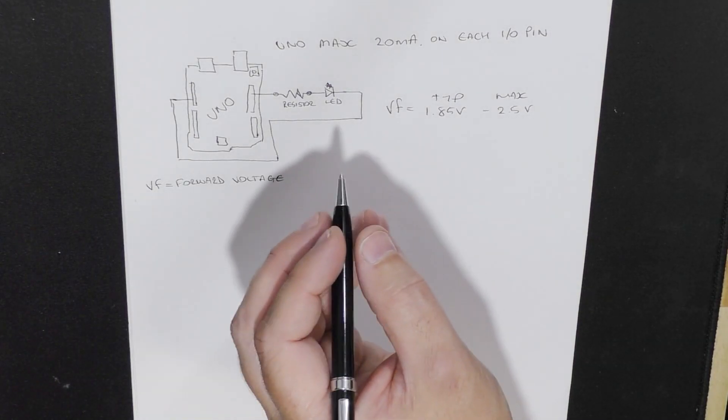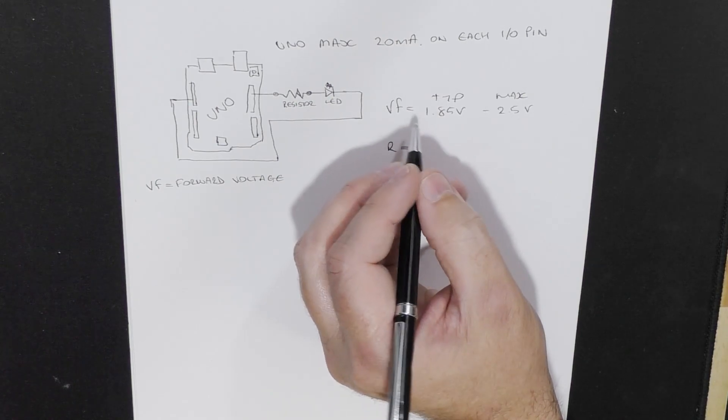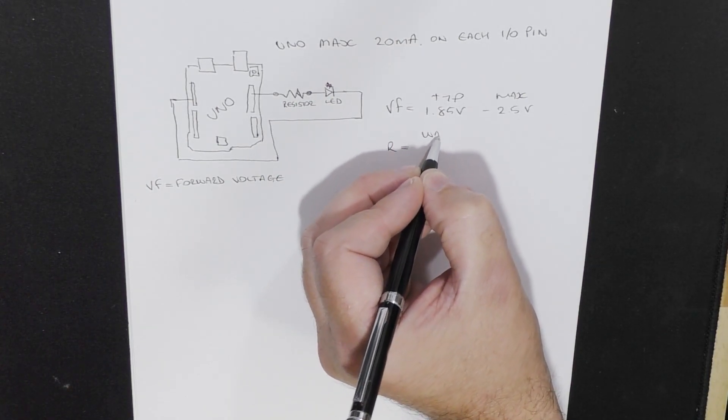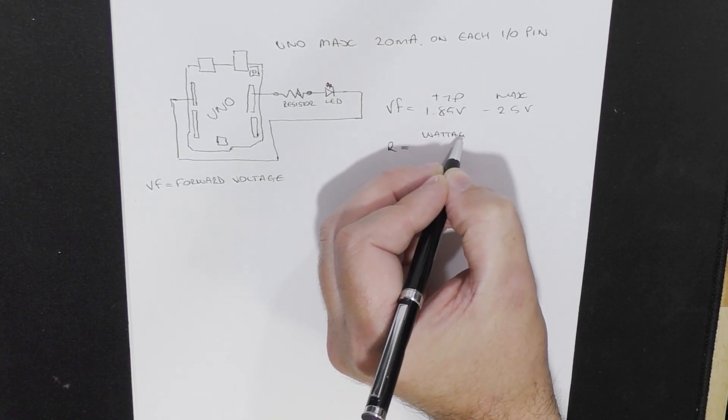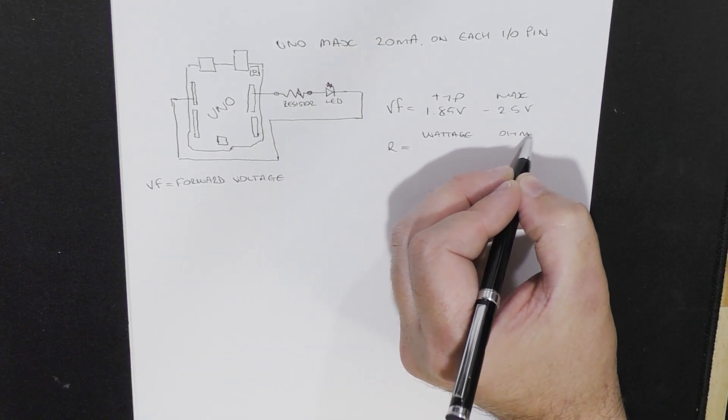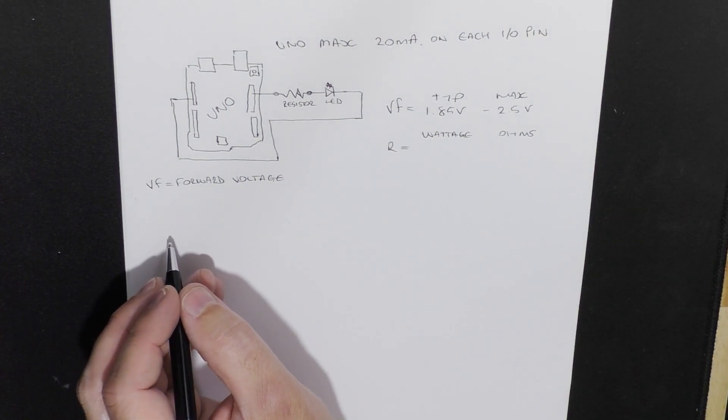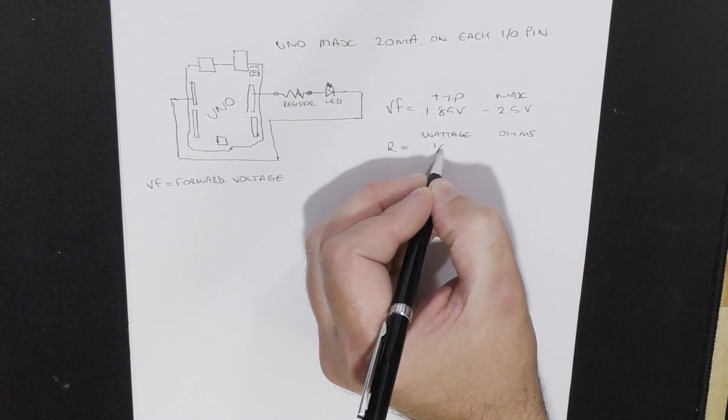So with the resistor, we need to know the wattage required and the ohms required. One of the standard wattages of a resistor is 1.25 watts.